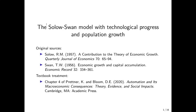In the last video, I presented the Solow-Swan model without technological progress and without population growth. This is the simplest version of the model, and we already saw that we can get some basic insights into convergence processes and differences in steady states between different economies. However, we cannot explain long-run growth with such a model. But if we add technological progress, we can explain the trend growth rate of economies such as the United States and Germany. In this video, I'd like to present the more sophisticated version of the Solow-Swan model with technological progress and with population growth.